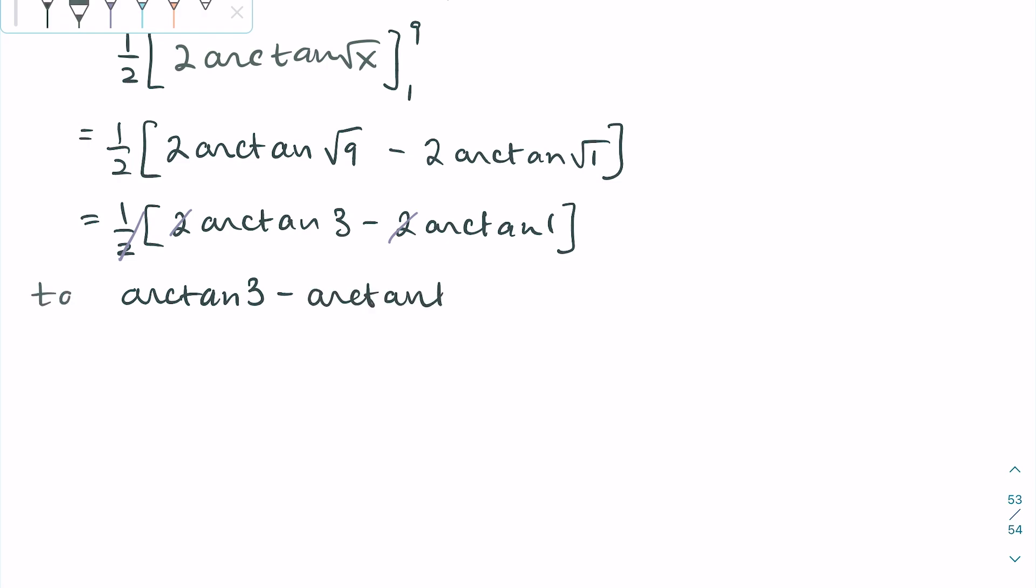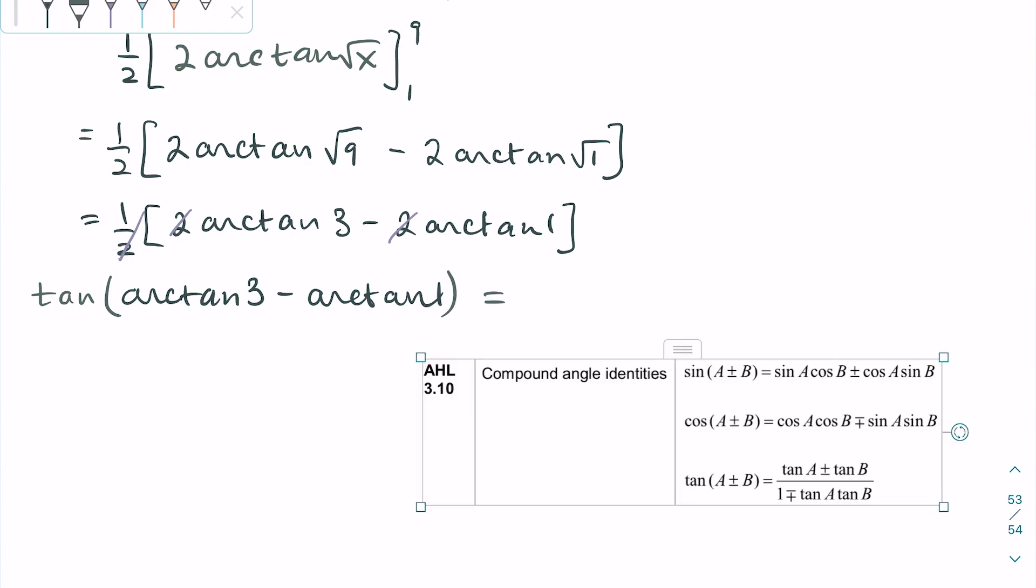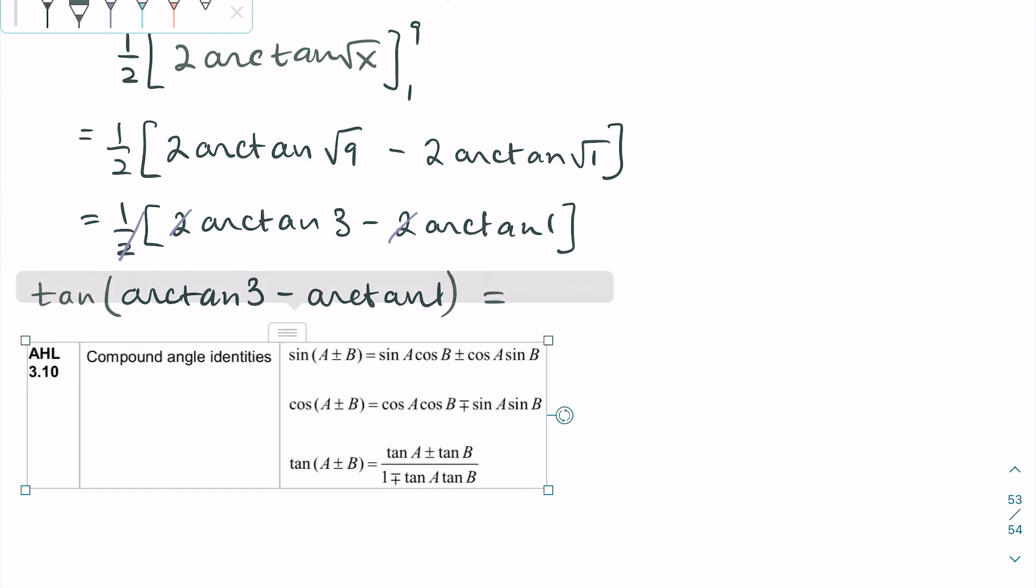The question asks us to represent the answer in terms of one arctan, so we need to combine these two arctans into one. We can do this by taking the tangent of this value and using a compound angle identity from the formula booklet.